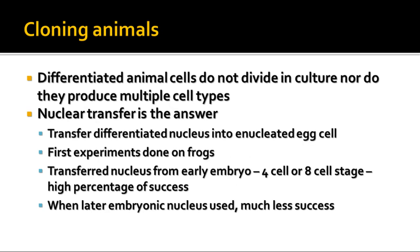Scientists found that they had more difficulty when they tried to clone whole animals from single cells. Differentiated animal cells don't divide in culture and produce multiple cell types like plant cells do. So after many failed attempts, they decided to try transferring the nucleus of a cell into an egg cell. Egg cells are programmed to produce a whole organism when they get a full complement of chromosomes, so if you take out the nucleus and put in the nucleus of another cell, it makes sense that you could stimulate that to grow into an embryo.